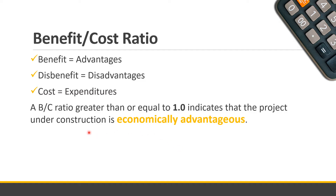A benefit-cost ratio greater than or equal to 1 indicates that the project under consideration is economically advantageous. If it is less than 1, disregard that option or alternative. We will go for 1 or greater than 1.